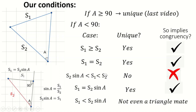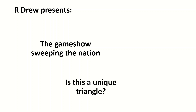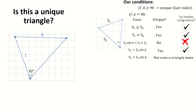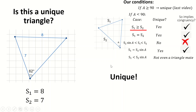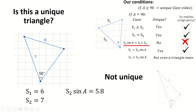Now we can move on to the game show sweeping the nation: 'Is this a unique triangle?' I'd recommend you pause the video and play along. Round 1: the 8, 7, 62 triangle — is that unique? Well, S1 is 8, S2 is 7, and S1 is bigger than S2, so it's unique. Well done. Round 2: the 6, 7, 56 triangle. S1 is 6, S2 is 7, so S1 is less than S2. Is S1 bigger than S2·sinA? S2·sinA is 7·sin56, which gives a value that S1 sits between S2 and S2·sinA — so this is a non-unique case. The other option to draw it looks like this.